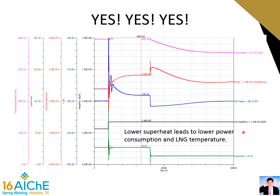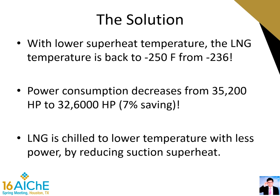Now we take a closer look at the strip chart. At time 8,000 seconds, the superheat set point is changed to 20°F. Please notice the superheat almost reaches 0°F, so on a real plant, please change the set point slowly. After a long waiting of several hours, the plant is finally stable. Compressor speed drops to about 3,200 RPM and the LNG temperature is back to negative 250°F. Power consumption drops to 32.6 thousand horsepower instead of 35.2 thousand horsepower — approximately 7% energy saving — while the product specification is still met. The LNG is chilled to the lower target temperature with less power consumption, simply by reducing the compressor suction superheat.